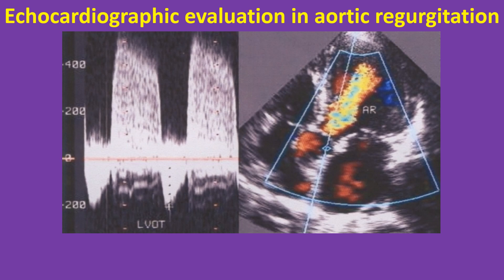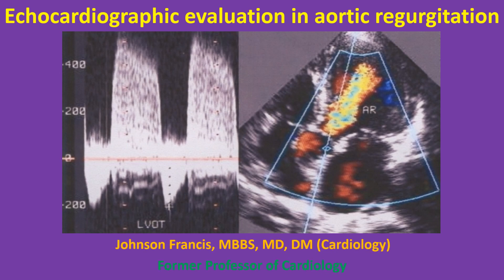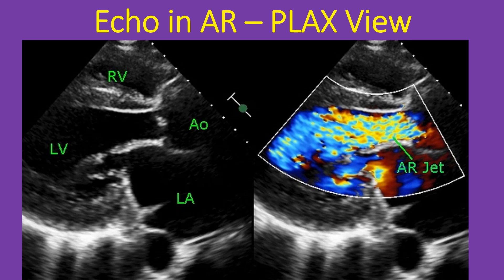Echocardiographic evaluation of aortic regurgitation demonstrated through multiple images. The echocardiogram in parasternal long axis view shows a dilated left ventricle, left atrium, aorta, and a small portion of the right ventricle, which is usually the outflow region.